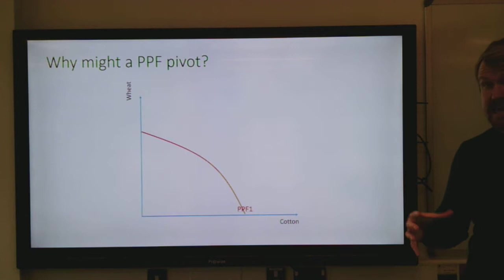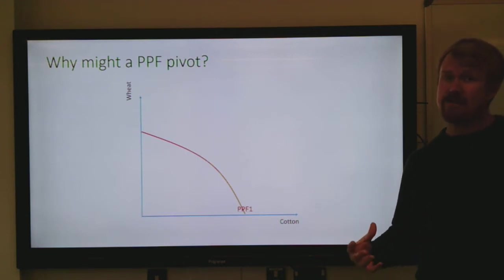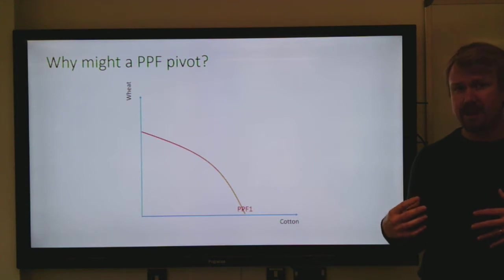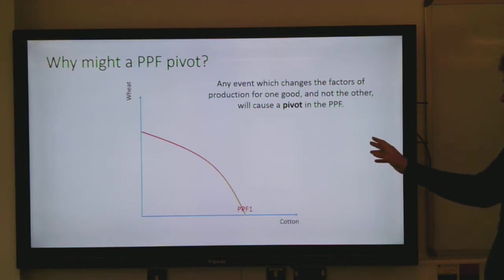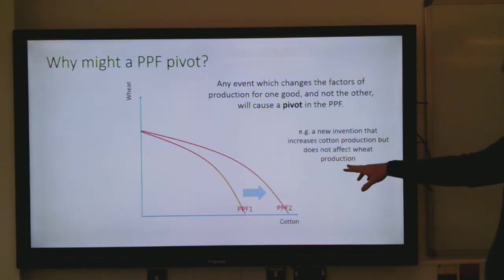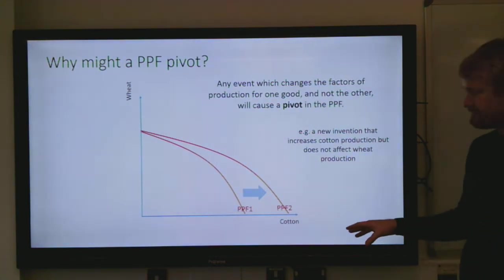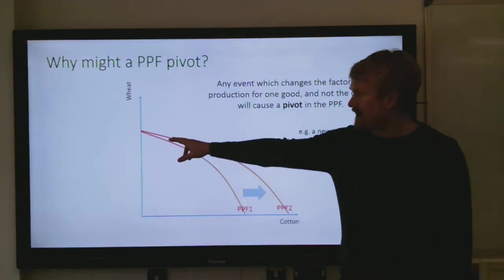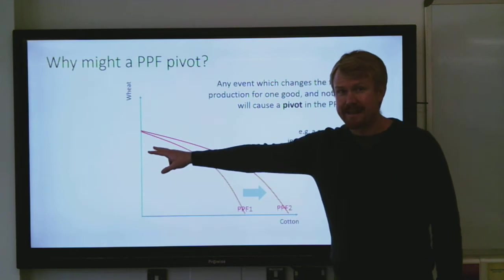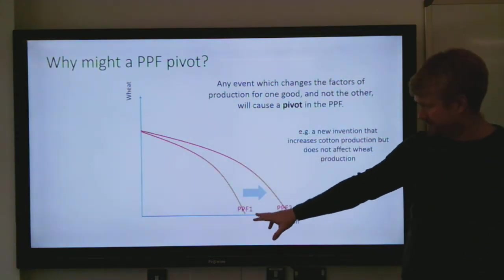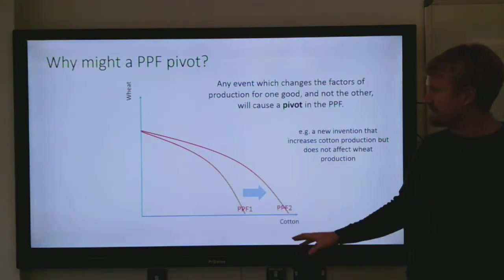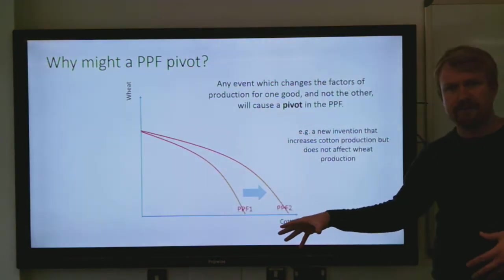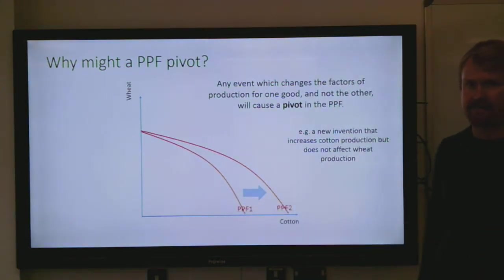A PPF will pivot if you have an event which increases the ability of the economy to produce one good but not the other — any event that changes the factors of production for one good but not the other. If we had a new invention that increases cotton production but does not affect wheat production, that will mean you have the same y-intercept for wheat, but because you can produce more cotton the whole thing pivots outwards, giving a higher x-intercept because any amount of cotton you're producing, you can now produce more of it due to the new machine.